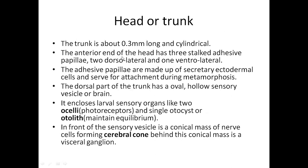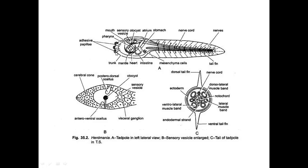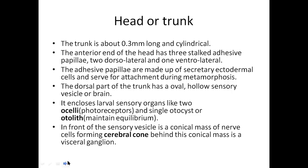The first part of the tadpole larva is the head or trunk region, which is a cylindrical structure measuring about 0.3 mm. In the head region there are stalked adhesive papillae — two dorsolateral and one ventrolateral in position. These papillae are made up of secretory ectodermal cells and help in attachment during metamorphosis changes. Because the larva becomes geotropic and moves towards the ground, it needs to get attached, which is the role of the adhesive papillae.